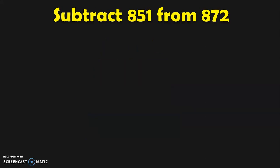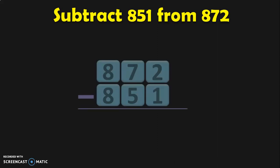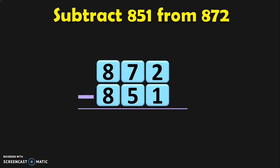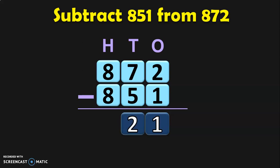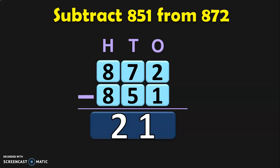Let us do the next sum: subtract 851 from 872. Write the two three-digit numbers one below the other with place values and begin from the ones place. Two minus one in the ones place gives one. In the tens place, seven minus five — seven in the mind, five in the fingers: six, five, four, three, two. In the hundreds place, eight minus eight gives zero. You can write the answer as 021 or simply as 21, both are correct.